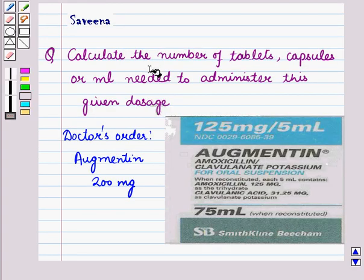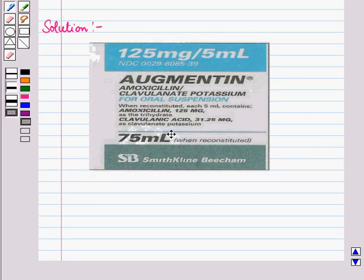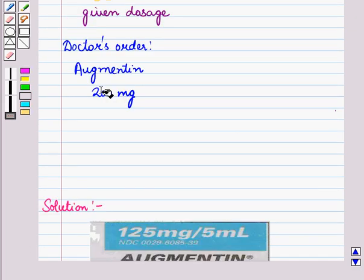In this question we have to calculate the number of tablets, capsules, or millilitres needed to administer the given dosage. First of all, let us see this medication label. From this label we see that the medication is administered in millilitres, so our answer unit will be in millilitres. The doctor's order says administer 200mg, so we have to find how many millilitres it will take to make 200mg.